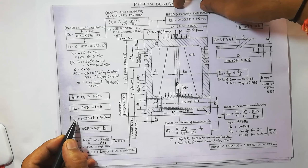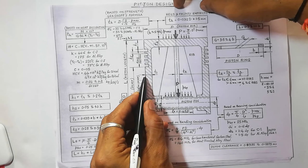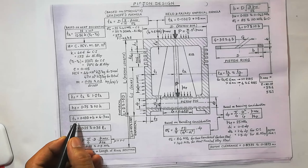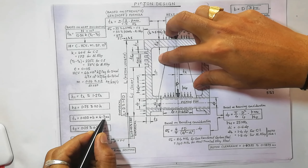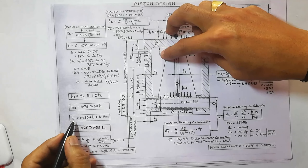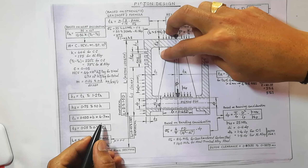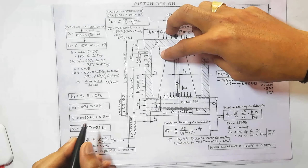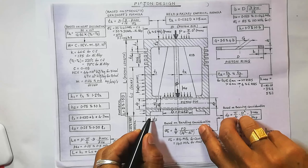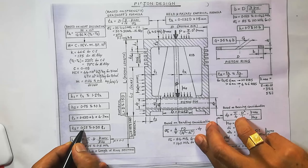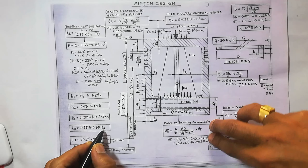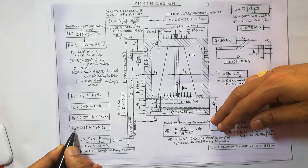t1 is the thickness of the skirt or barrel of the piston, given by t1 = 0.03D + b + 4.9 mm. It is the cylindrical portion of the piston — this is the piston barrel thickness. t2 is the thickness of the lower portion, given by 0.25 to 0.35 times t1, from which we get the t2 value.